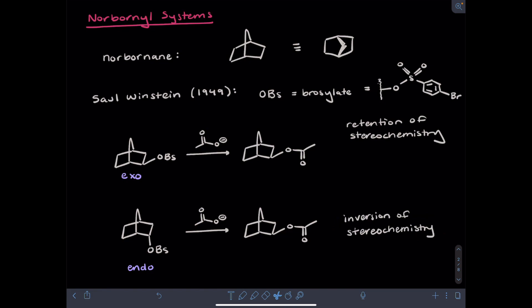So there's clearly something interesting going on here. And even more puzzlingly, the first reaction starting with the exo starting material proceeds 350 times faster than starting with the endo starting material. So all of this evidence is suggesting that this is not your typical SN2 or SN1 mechanism.